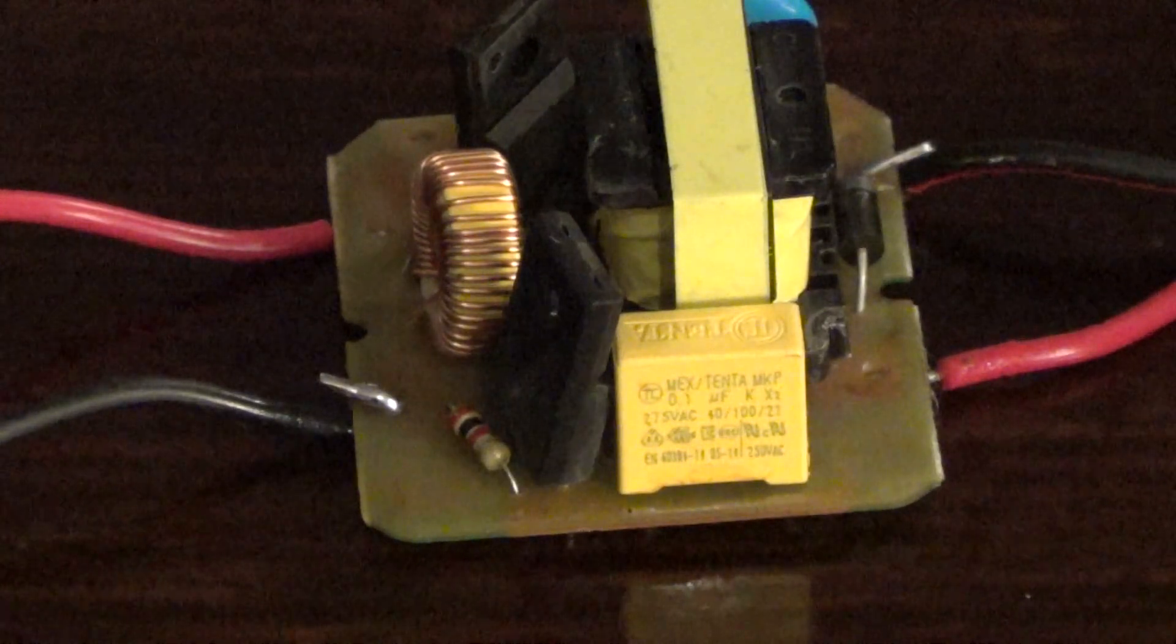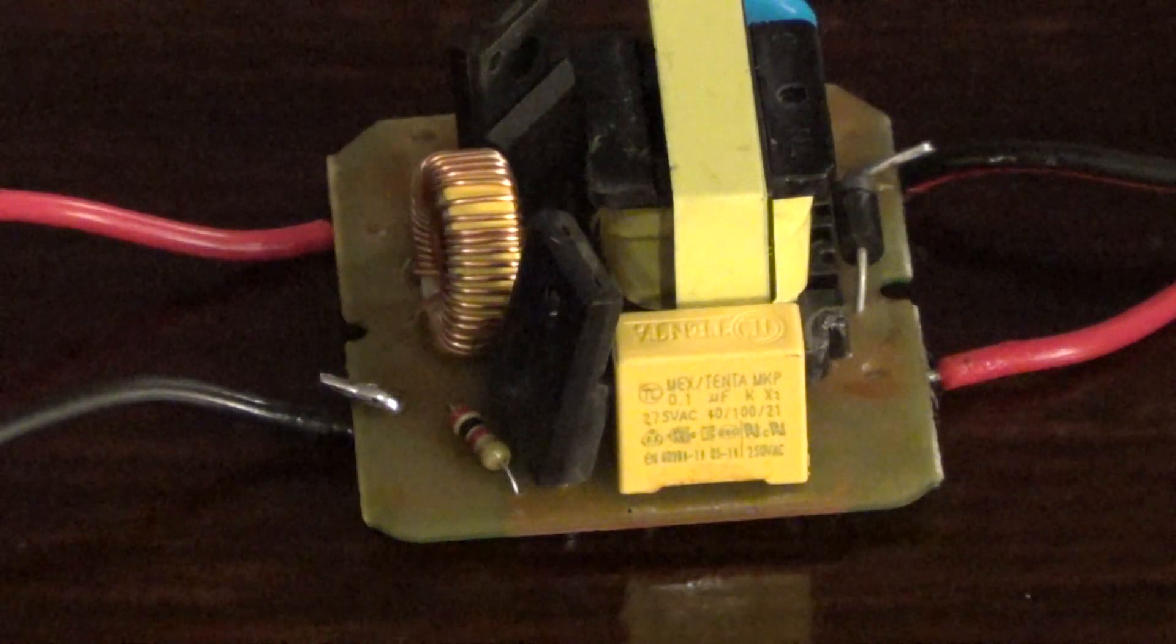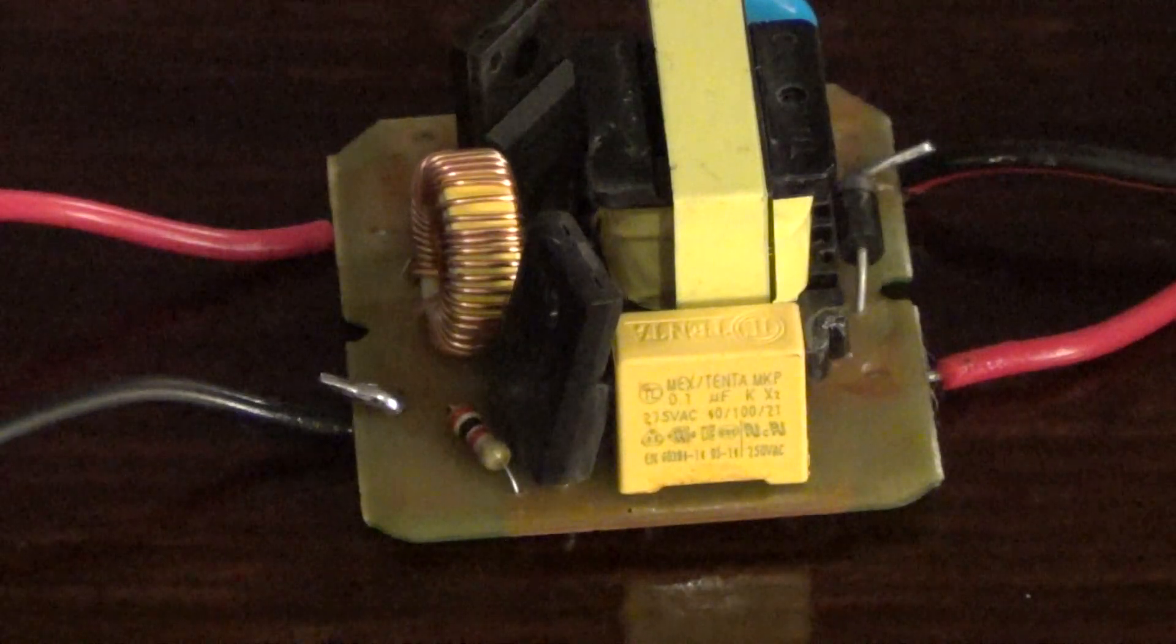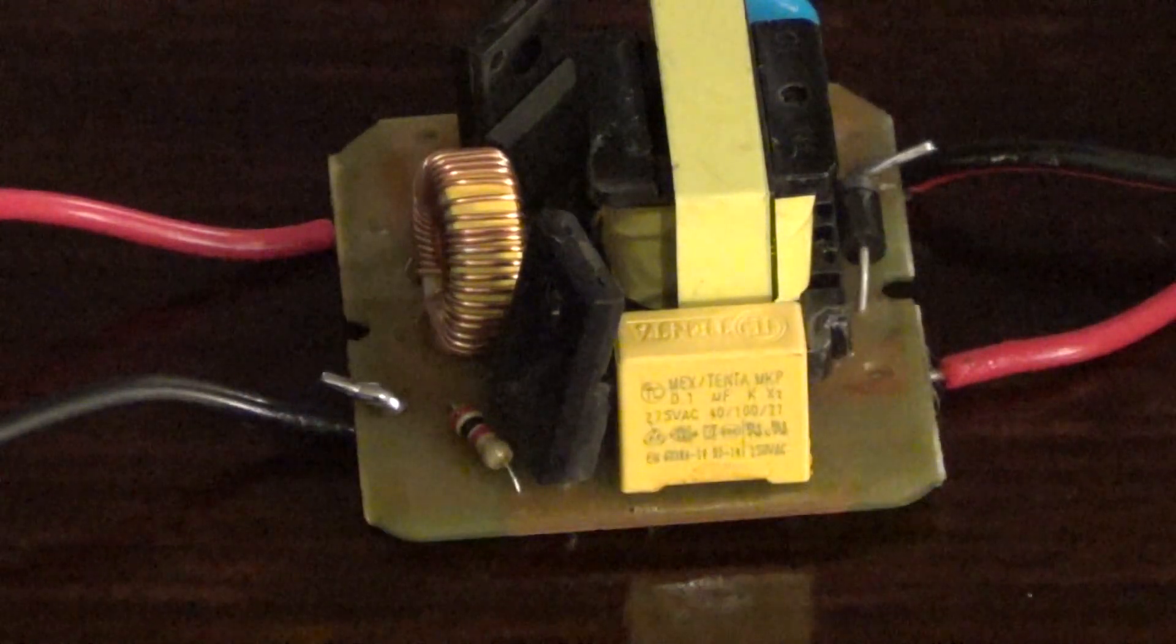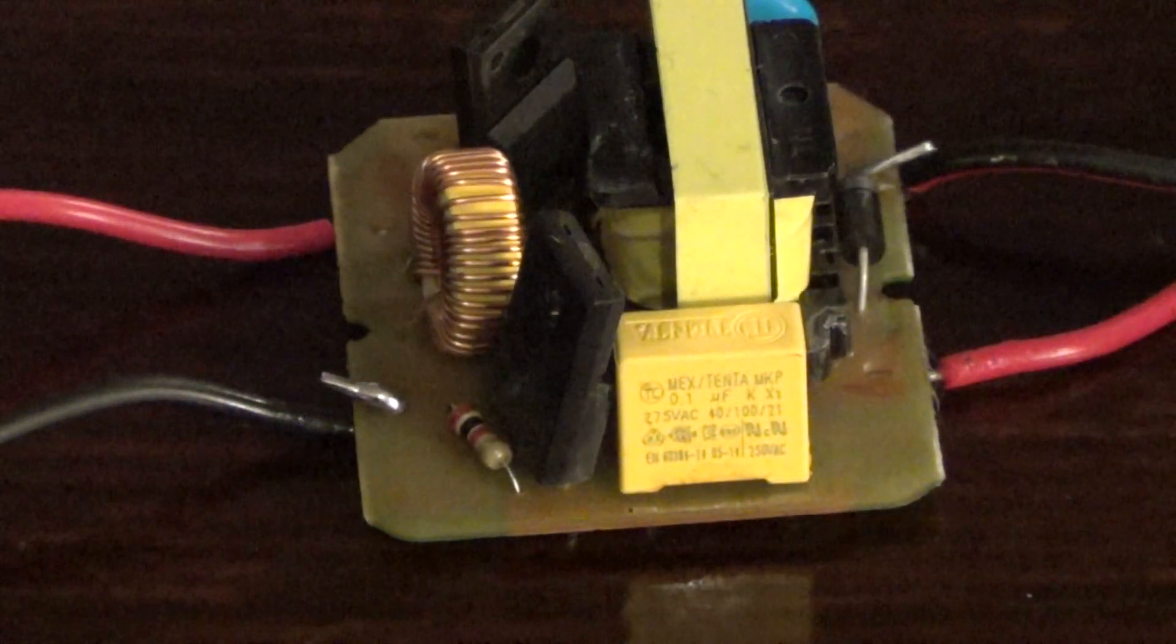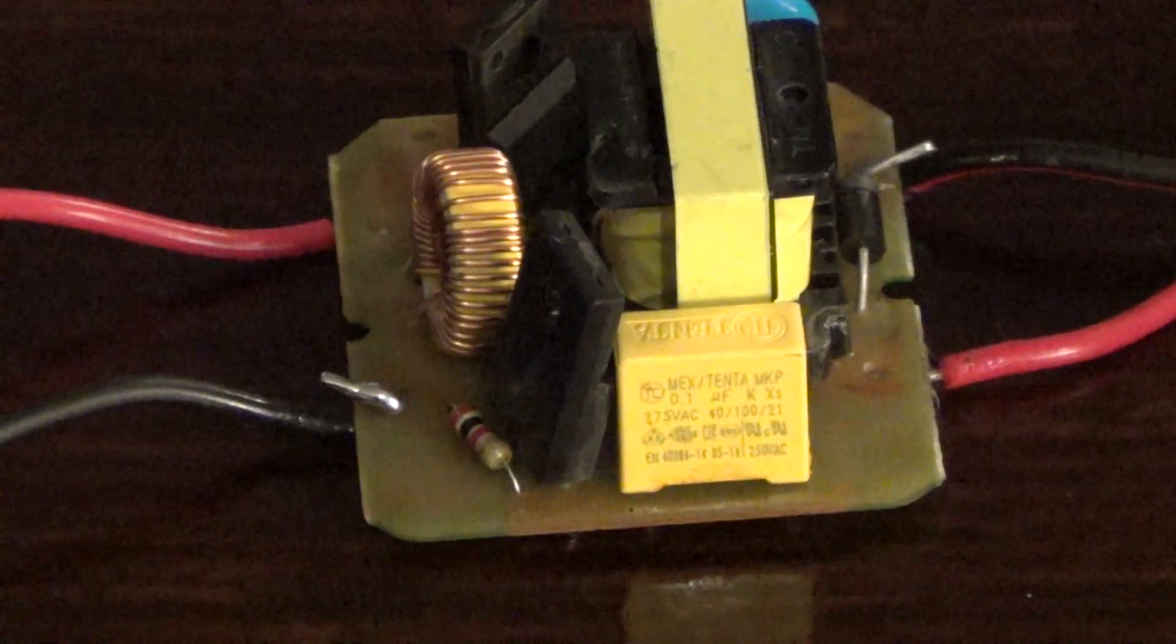It's a joule thief, a joule thief circuit. So on this side here you would put 12 volts and on the other side it'll come out at 220 volts AC. Now here's the cool part.